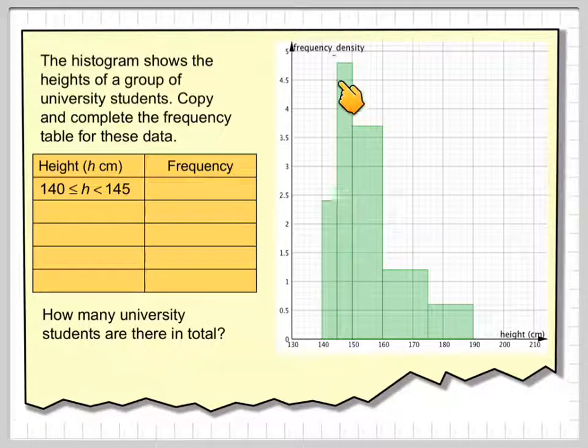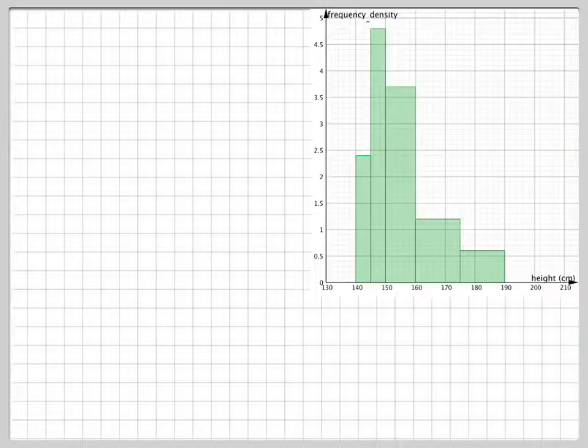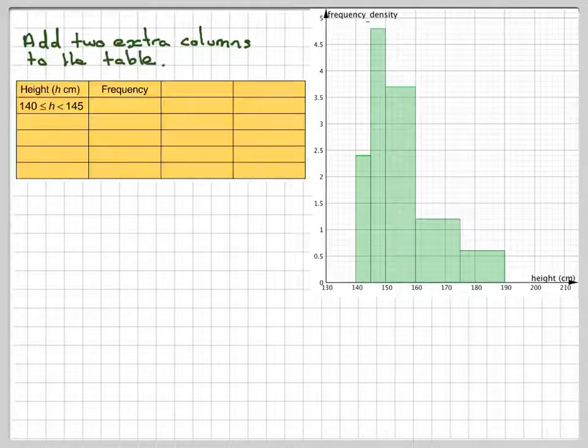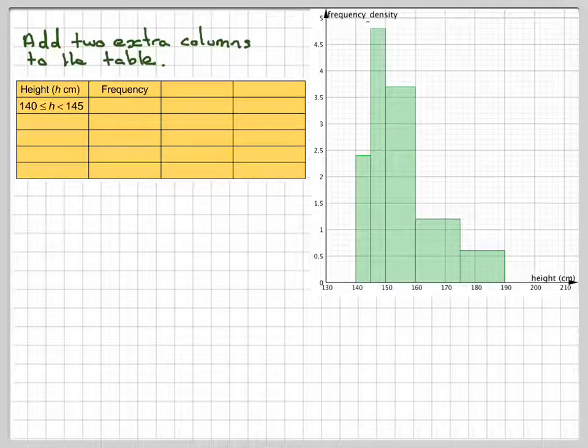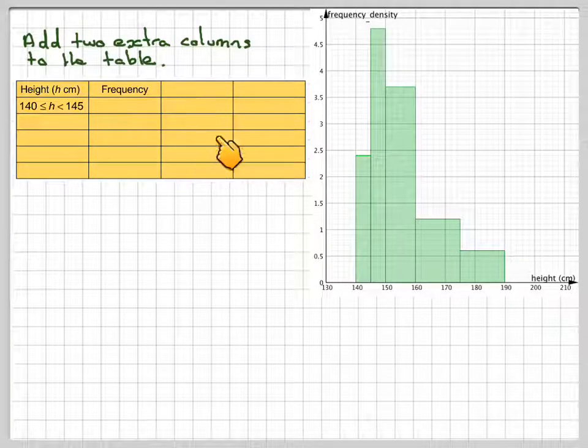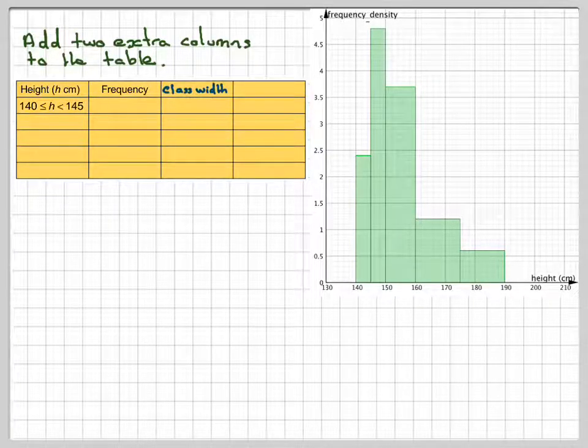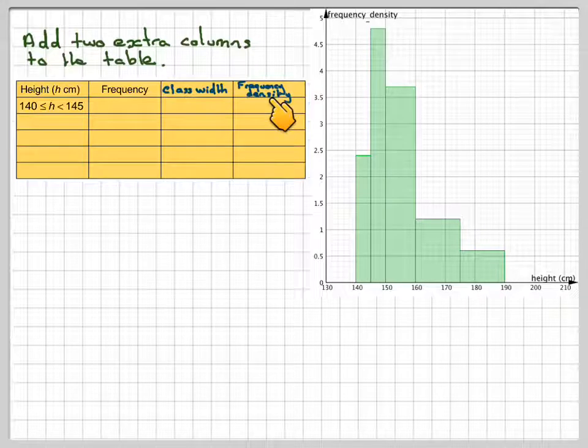We've got a histogram here because this is frequency density against height. So add two extra columns to the table. We're going to add these two columns here—one called class width and the other frequency density.